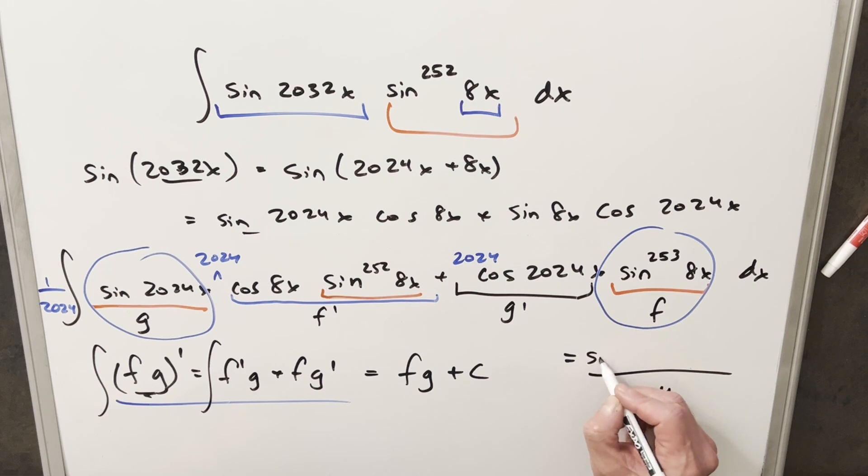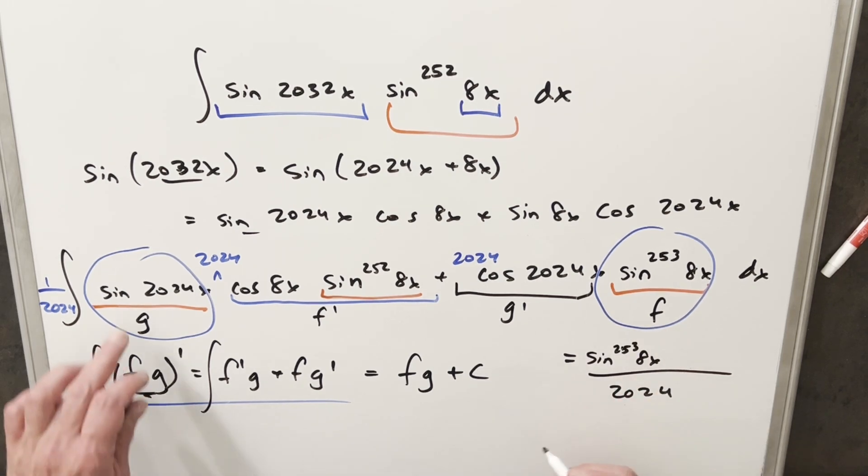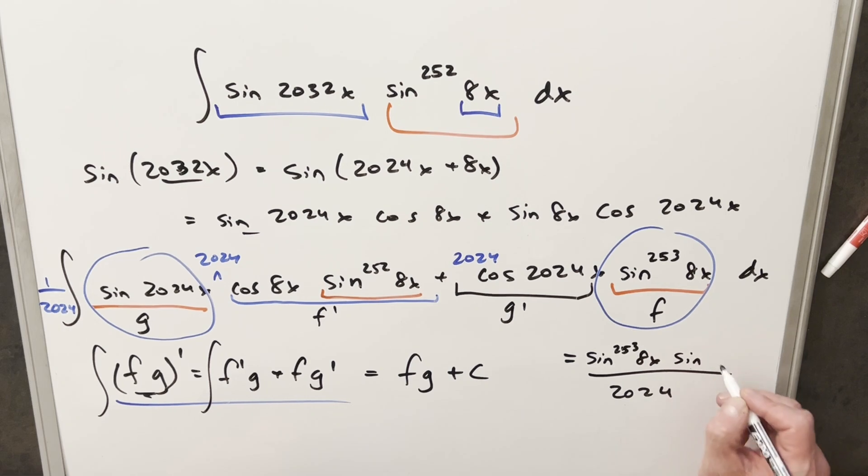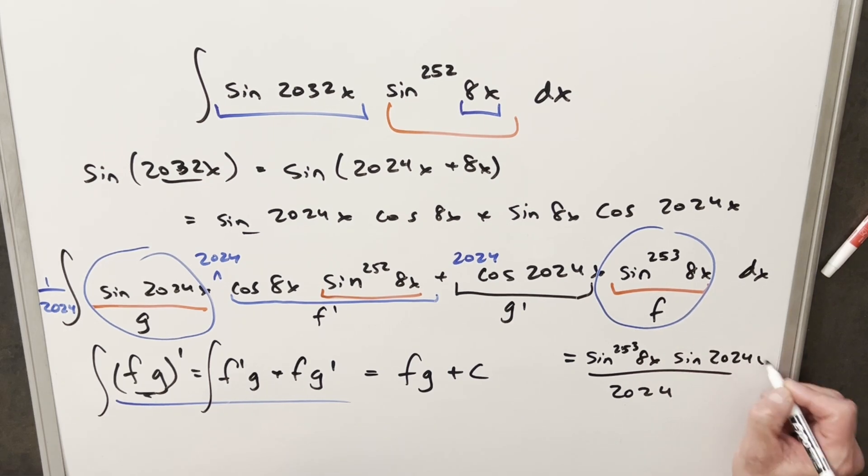So what I can do for the solution is I can write this all over 2024. And then we have our f, which is sin^253(8x). And then we'll have this other part, sin(2024x). I'll add a plus c on there. And that's it.